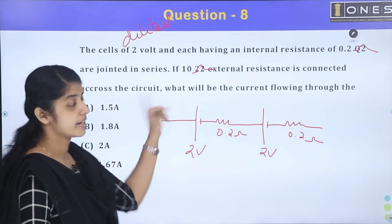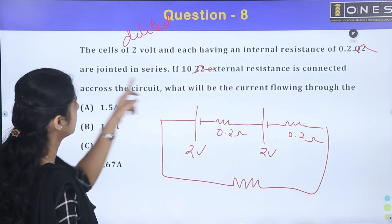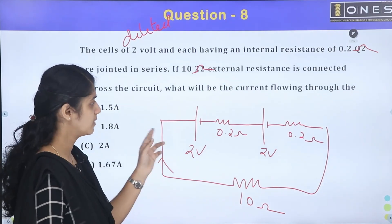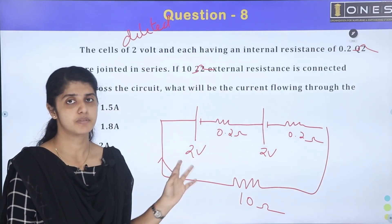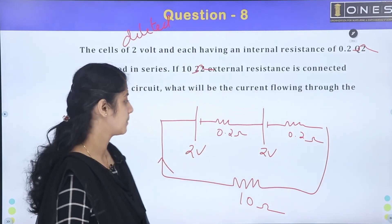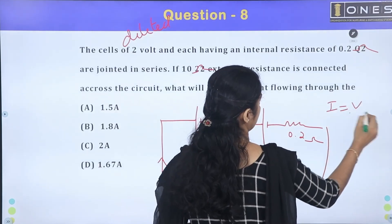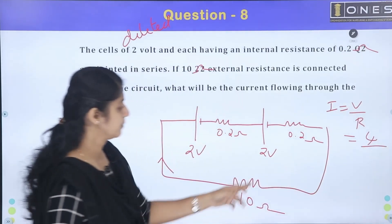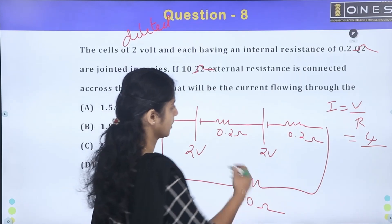The external resistance is 10 ohms, connected to this circuit. The cells are connected in series. Using Ohm's law, I = V / R. The total voltage is 2 plus 2 = 4 volts. The total resistance is the external resistance plus the two internal resistances: 10 + 0.2 + 0.2 = 10.4 ohms. So the current I = 4 / 10.4.